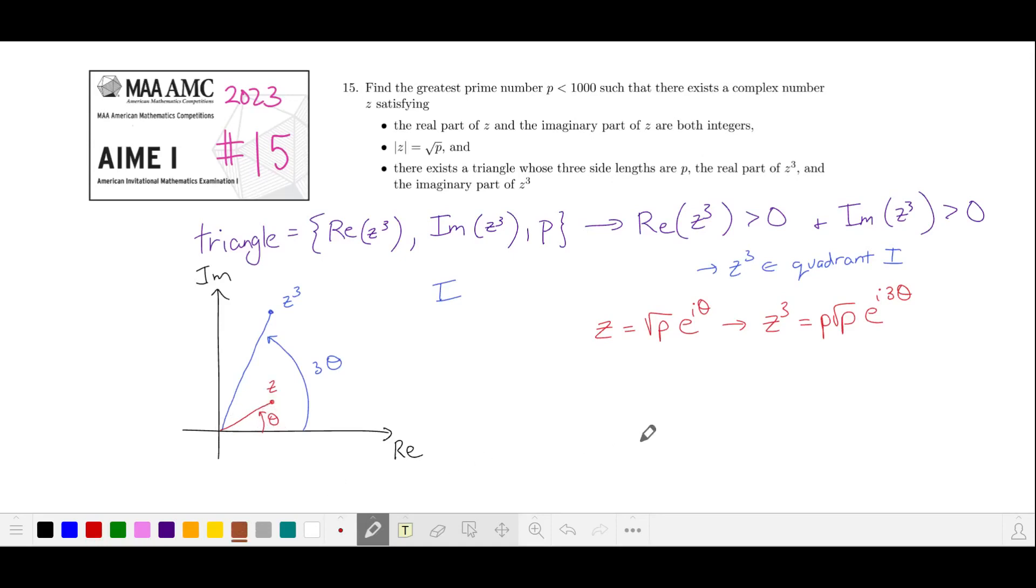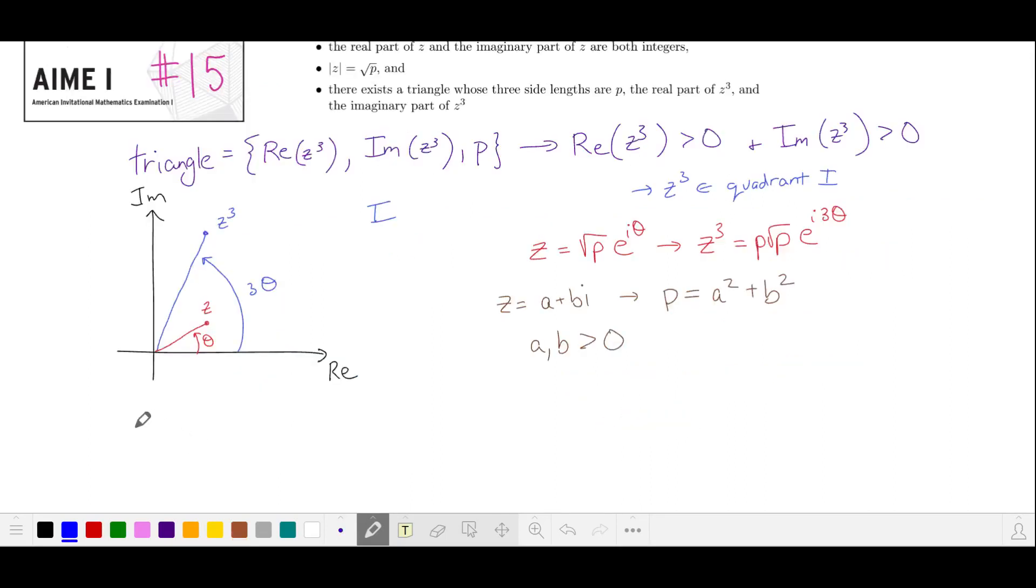There might be other solutions for z, but since we have p equals a squared plus b squared, where a and b are the real and imaginary parts of z, it's probably not going to matter for our purposes, and let's just assume that a and b are positive. Now let's use the rectangular form of z to find z cubed in terms of a and b. Expanding and collecting the real and imaginary terms separately, these are the rectangular coordinates of z cubed.